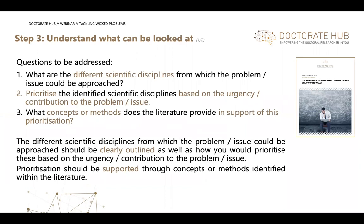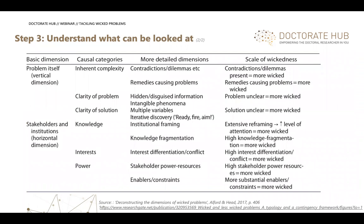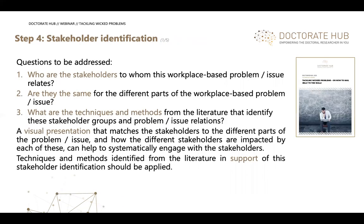Step three: identify what can be looked at — which types of differences across disciplines exist, which priorities need to be understood and why. The more precise you can be, the better you will understand the problem. This includes identifying basic dimensions, causal categories, more detailed dimensions, and the scale of wickedness. This provides a framework for classifications and groupings that may be adopted, depending very much on the specific case.